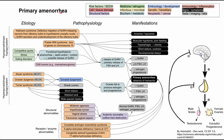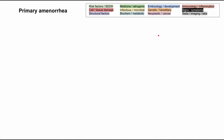This is a short video on primary amenorrhea. I'll be talking about the etiology, the pathophysiology, and the manifestations of primary amenorrhea. Each of the boxes is color-coded according to the legend in the top right, and I'll be clearing all of the boxes and talking through them one by one as we repopulate the flowchart. Let's go ahead and get started.